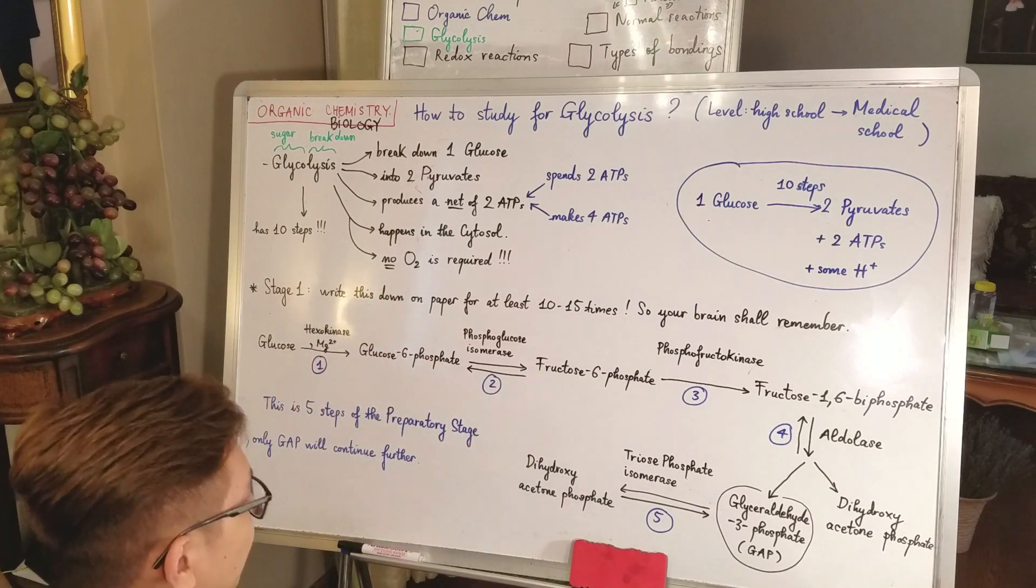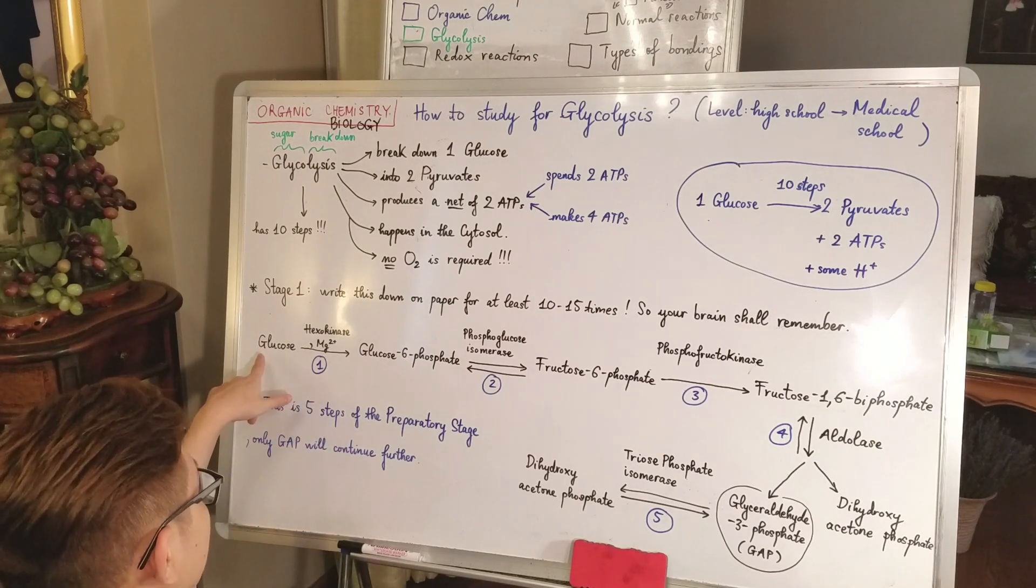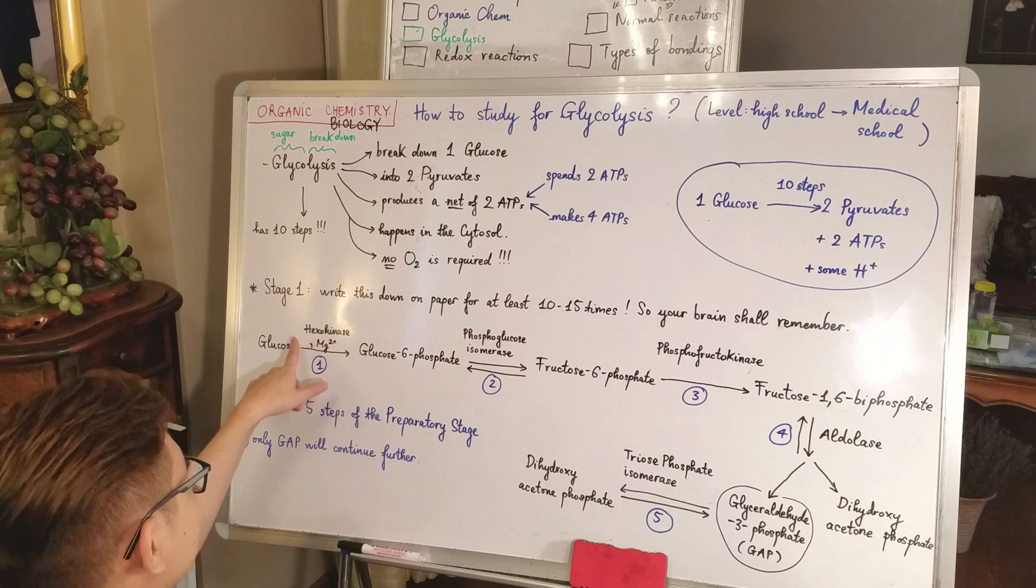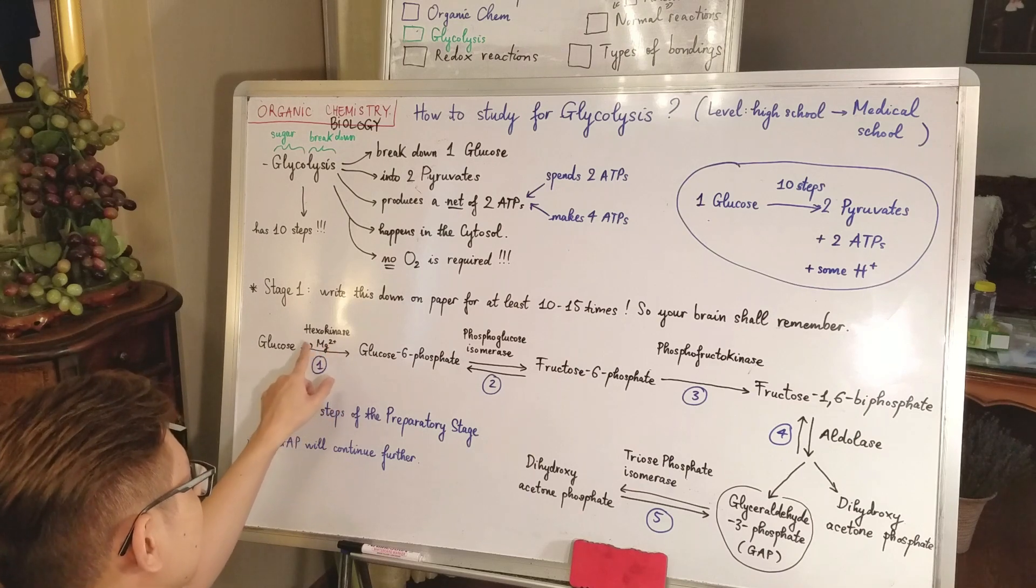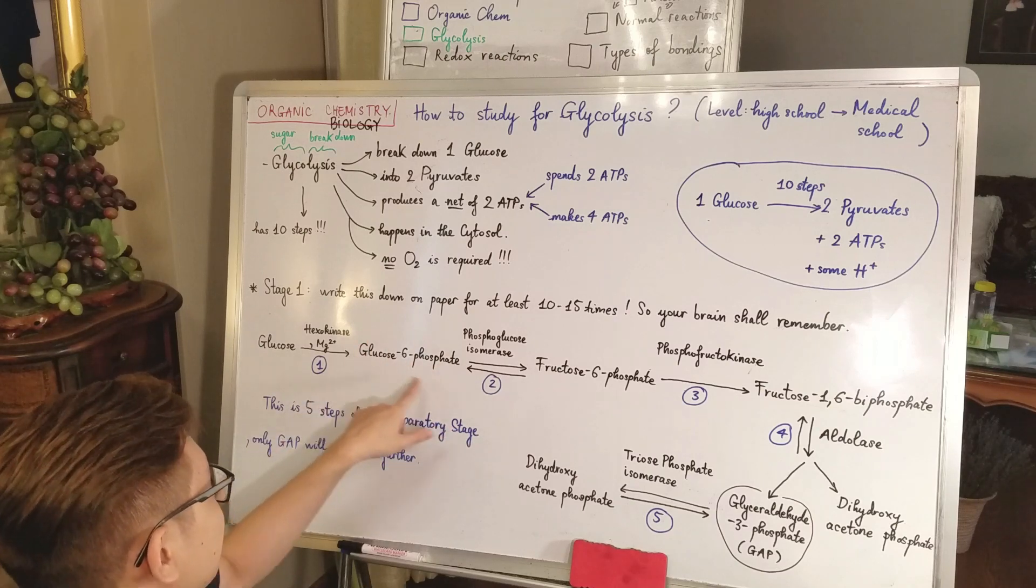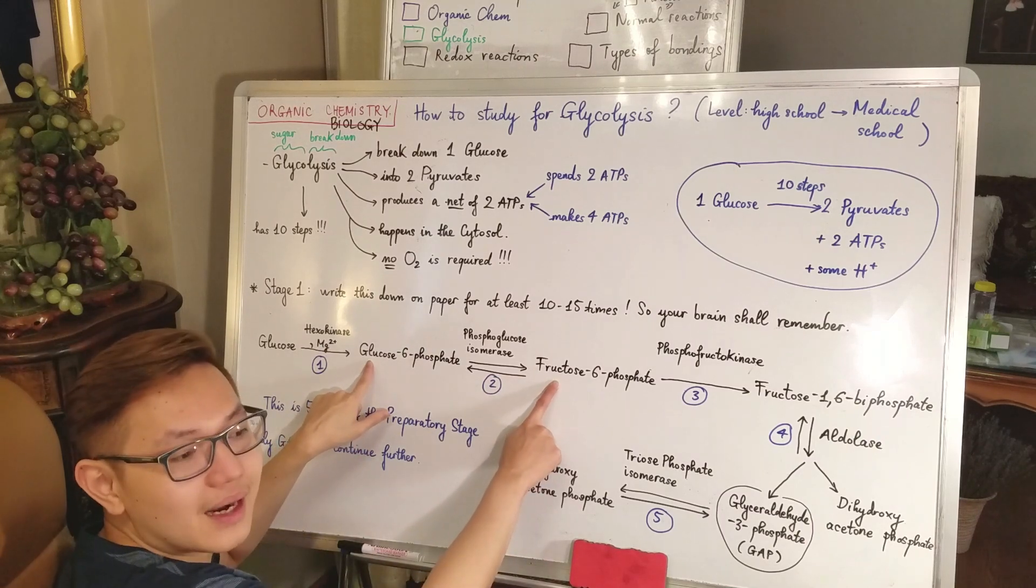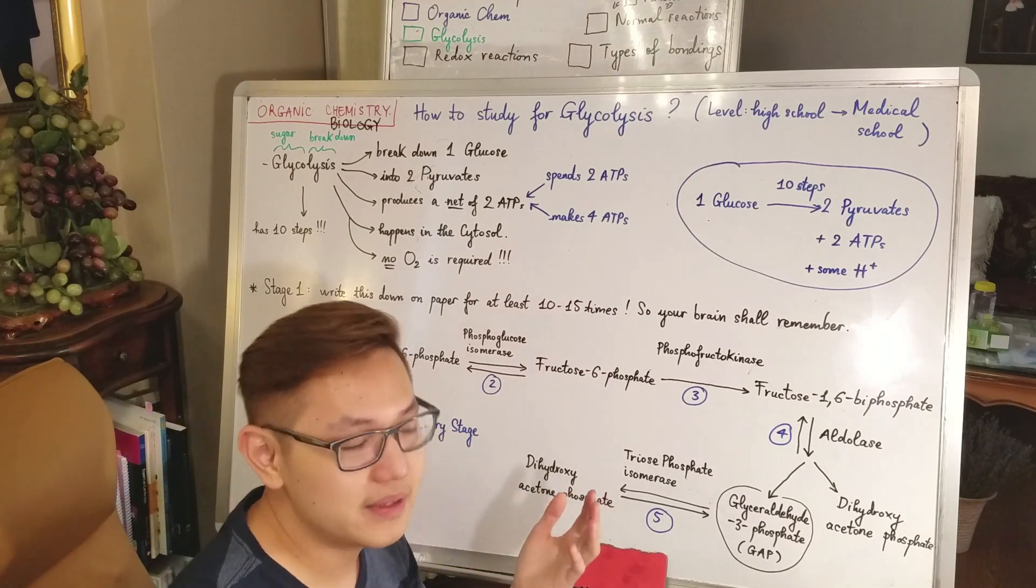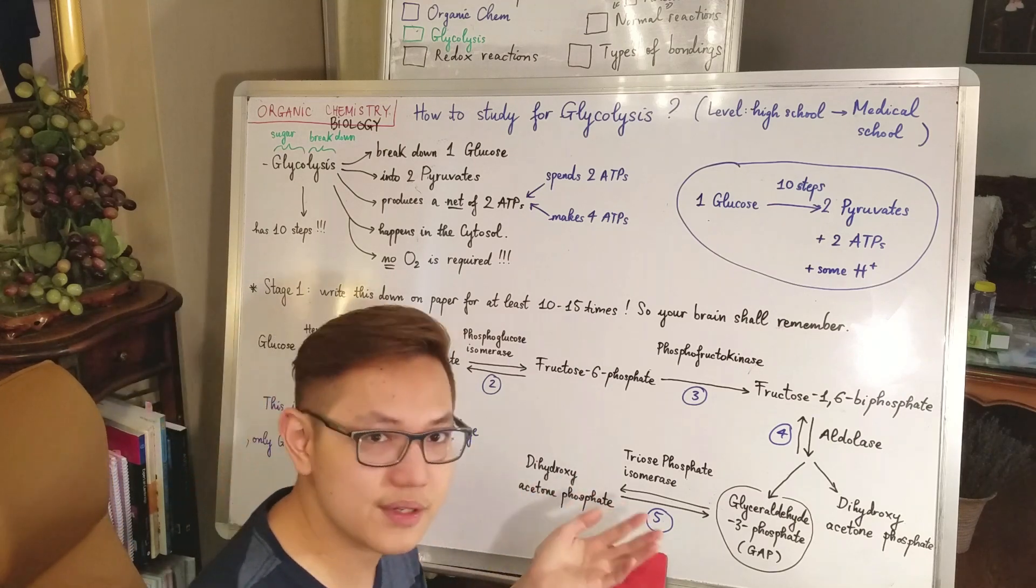Now I'm going to explain a little bit. Glucose, that one glucose, becomes glucose 6-phosphate. It requires an enzyme called hexokinase and an environment that has magnesium 2+ ion. Step two is when glucose 6-phosphate becomes fructose 6-phosphate. Fructose and glucose are isomers of each other. Isomers means they have the same amount of atoms, same number of carbon, same number of hydrogen, same number of oxygen.